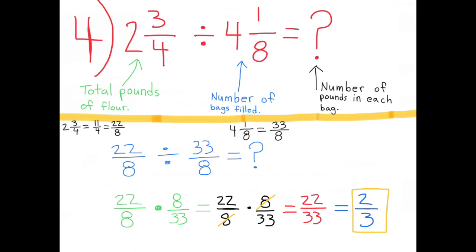Two and three-fourths is the same as eleven-fourths, which is also equal to twenty-two-eighths using a common denominator of eight. Four and one-eighth equals thirty-three-eighths. So we rewrite as twenty-two-eighths divided by thirty-three-eighths, which equals twenty-two-eighths times eight-thirty-thirds, equal to twenty-two-thirty-thirds, which reduces to two-thirds.